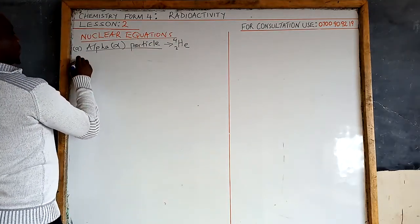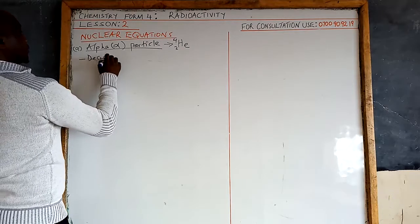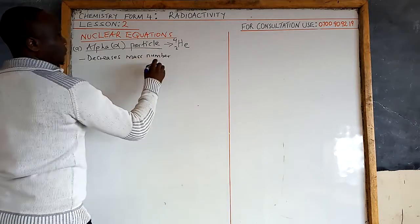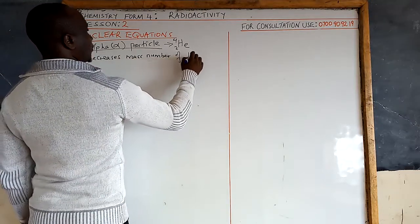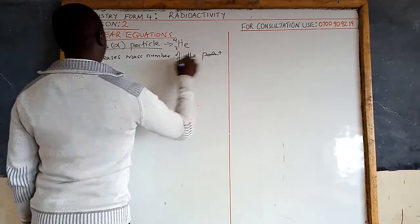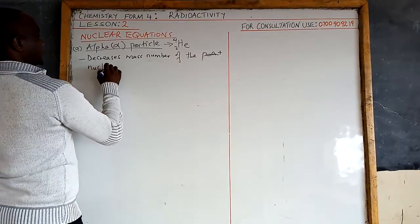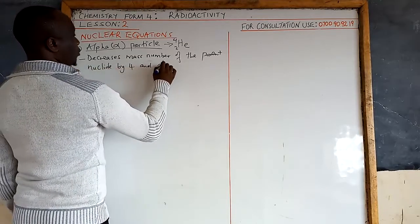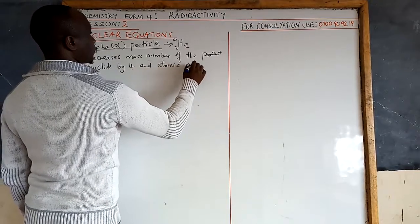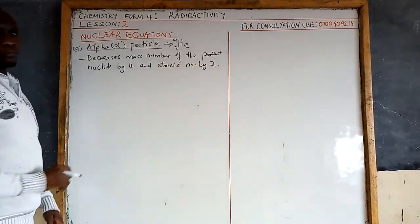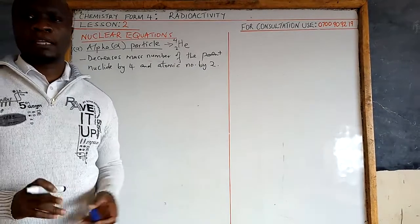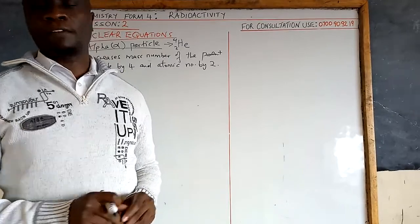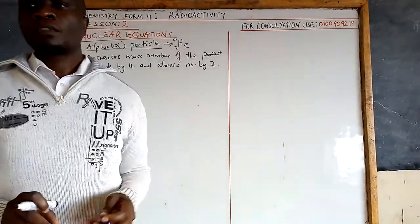When an alpha particle is emitted, it decreases the mass number of the parent nuclide by four and decreases the atomic number by two.